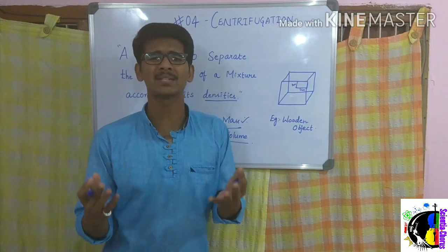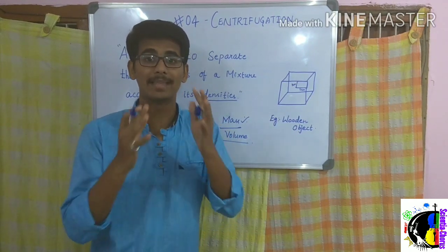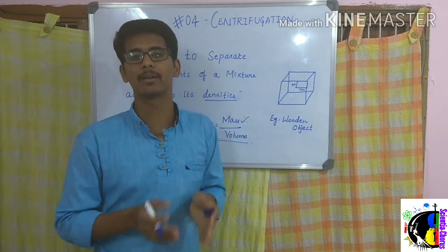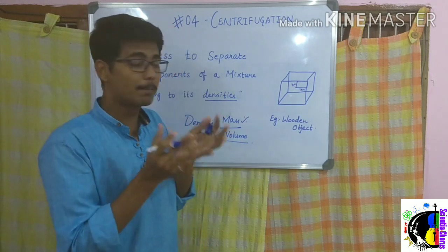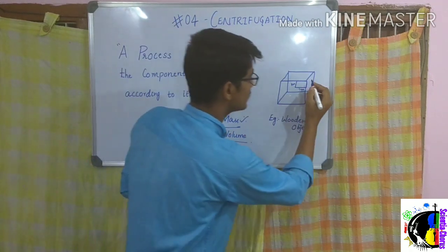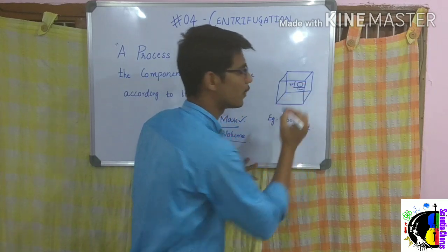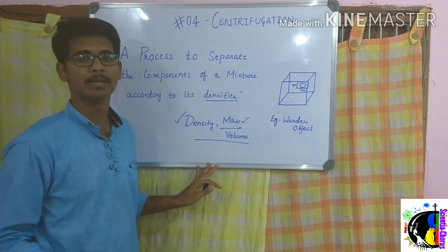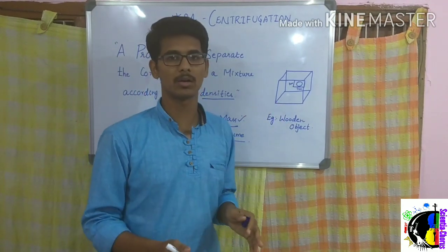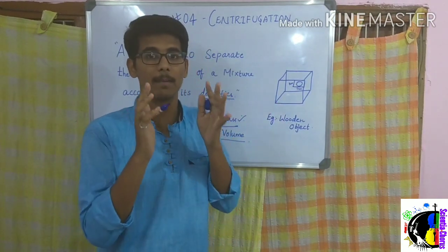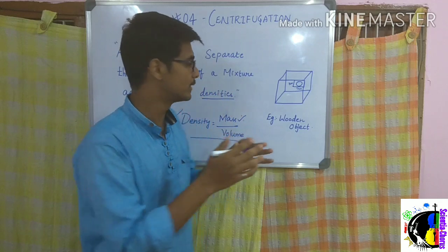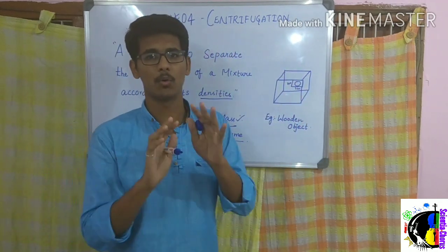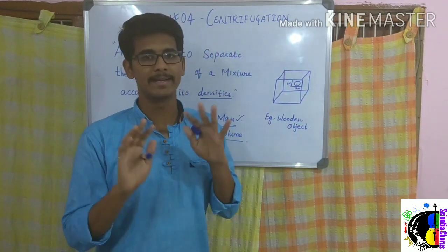Mass is nothing but the amount of matter present in a particular object. The amount of matter present in this particular unit volume is nothing but density. Since this is a solid object, the amount of matter will be more in this unit volume — so that is nothing but density.